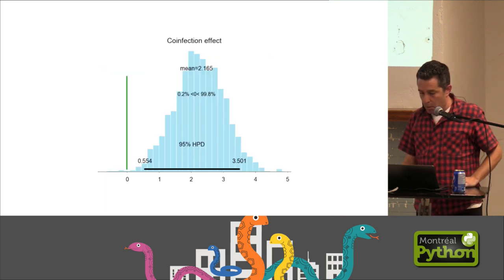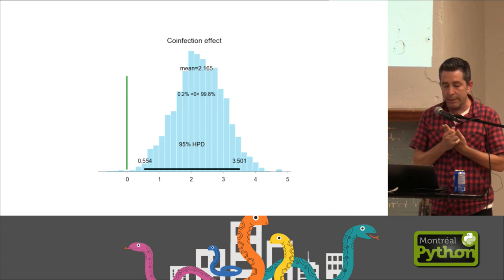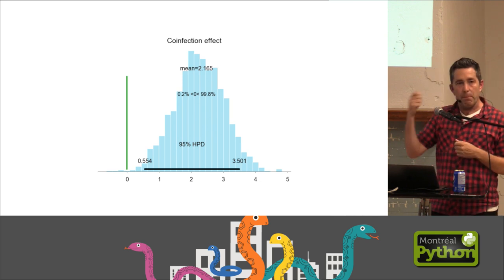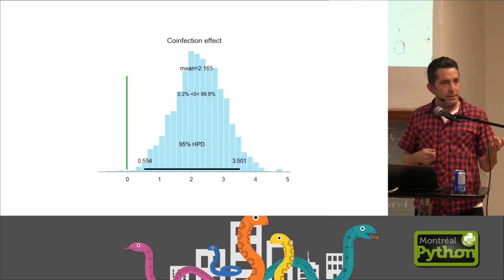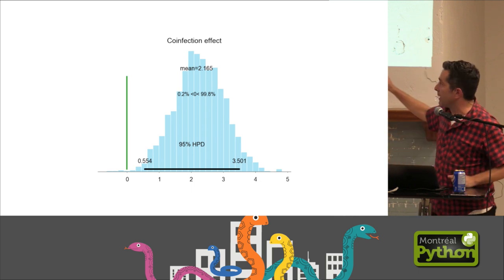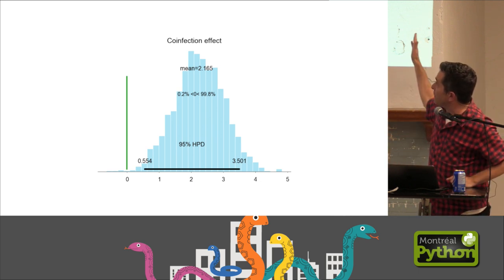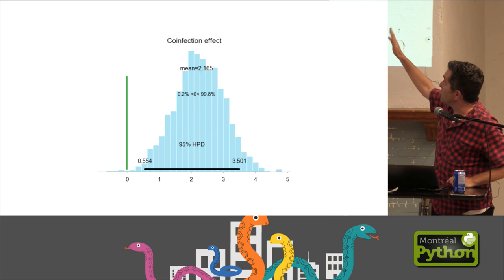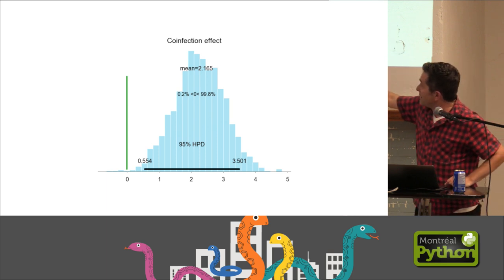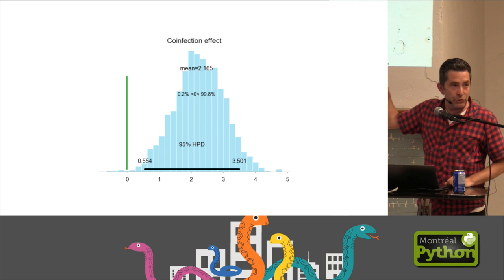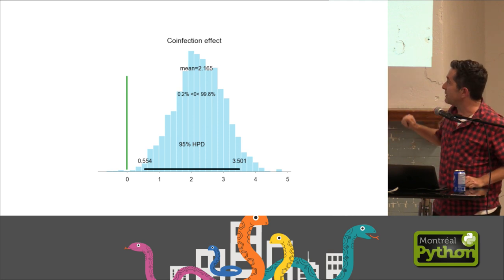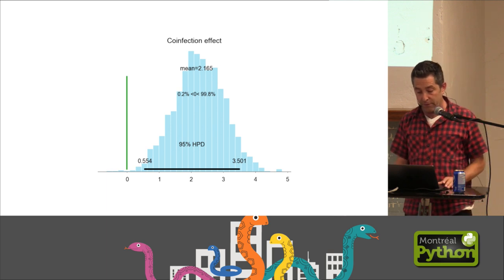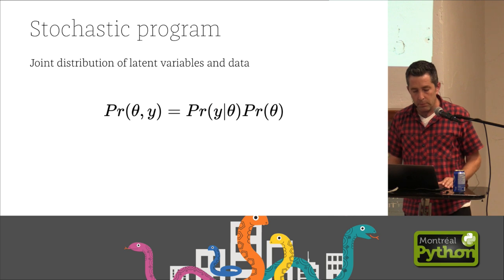And the big advantage to doing this is that everything here is in terms of probabilities. So all outputs from probabilistic programs will tend to be entire distributions. Rather than just getting a mean or median or some statistic, you get an entire distribution. This allows us to say things like, what's the probability this is greater than zero? So I build models of infectious disease systems. This was some co-infection effect, and we can see that it's almost certain that it's greater than zero in a probabilistic sense.